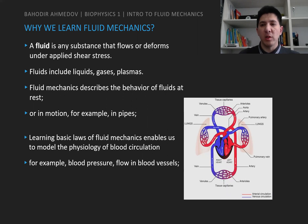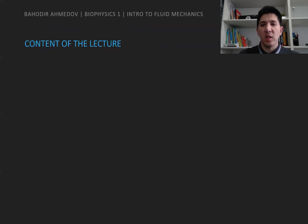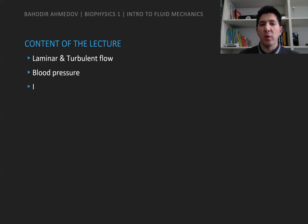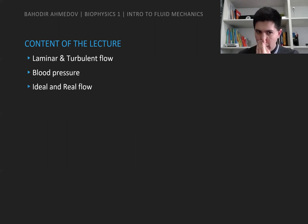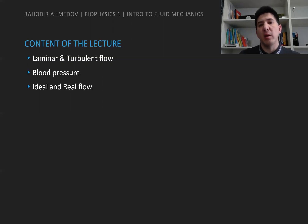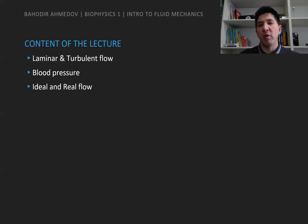Over this lecture, we're going to talk about the types of flows — like what is turbulent flow and what is laminar flow. We're also going to talk about blood pressure and about ideal and real flow — basically, the application of laminar and turbulent flow to blood pressure. It's one of the topics we're going to discuss today.